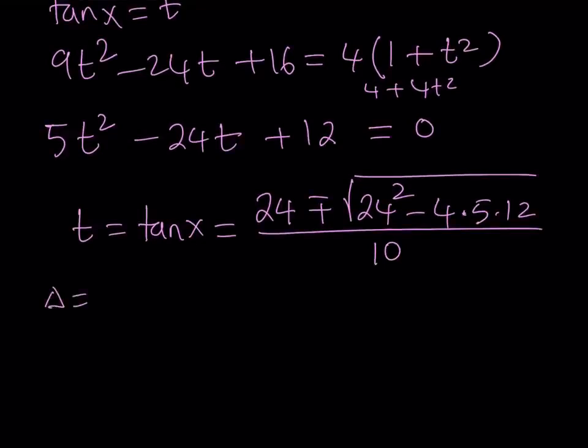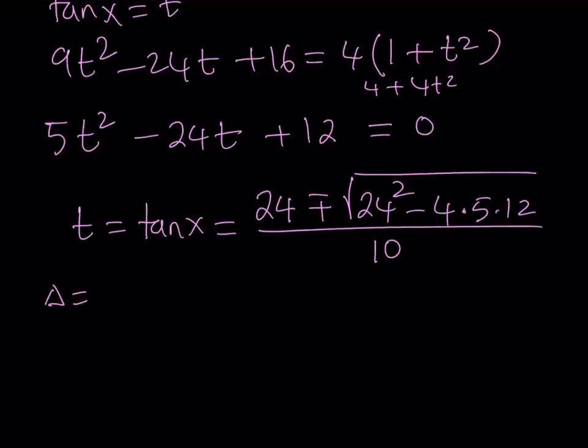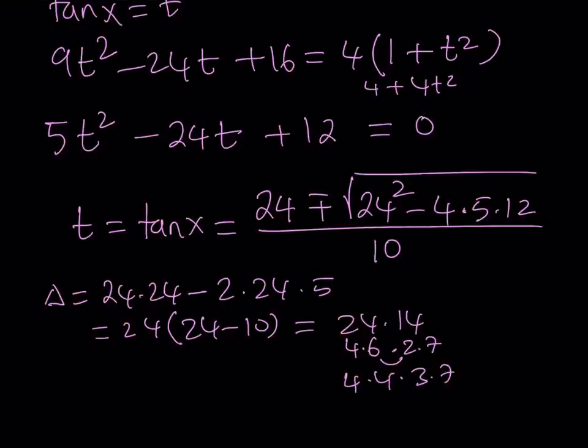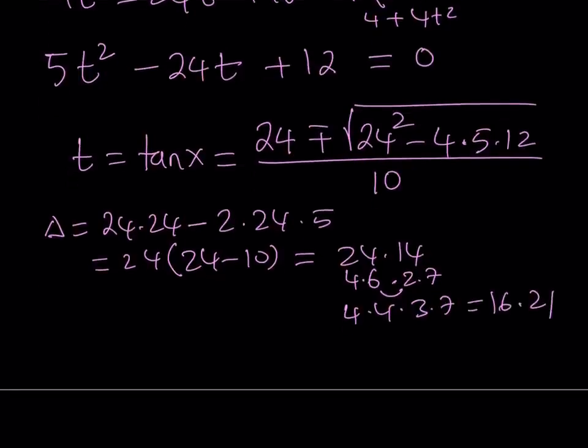Our discriminant is 24 squared minus 4 times 5 times 12. I can write 24 as 24 times 24, then minus 4 times 12, which is 48, so 2 times 24, with an extra 5. I can factor out 24. This gives 24 times 24 minus 10, which equals 24 times 14. Let's factor into perfect squares. This is 4 times 6. We get 2 times 7, and we can make another perfect square: 16 times 21. Our discriminant is 16 times 21.